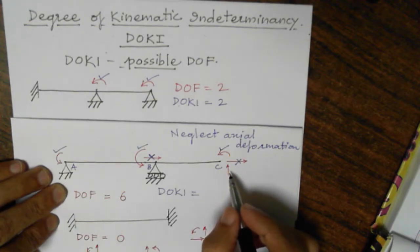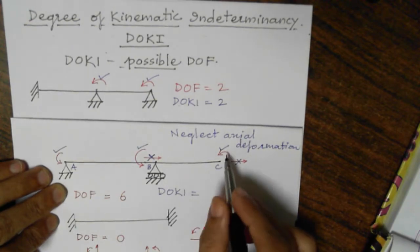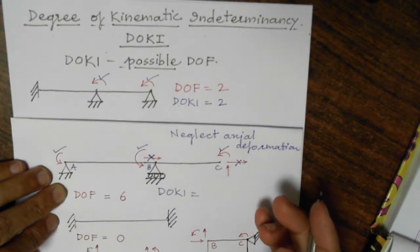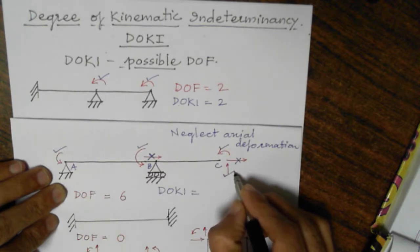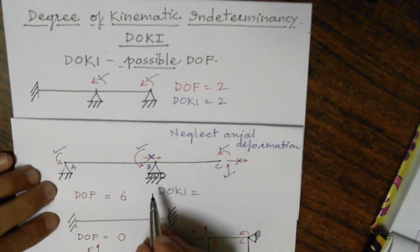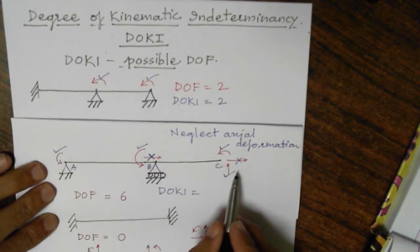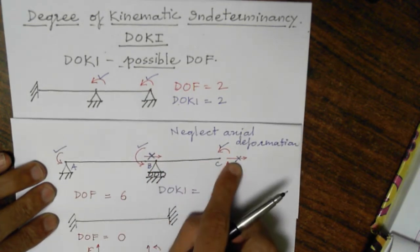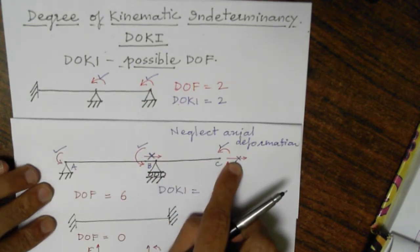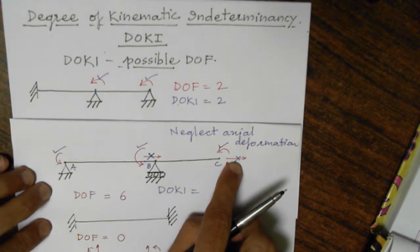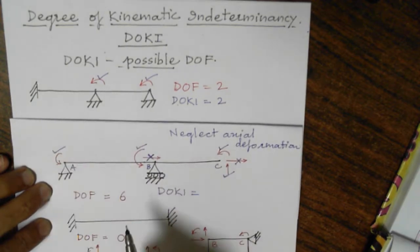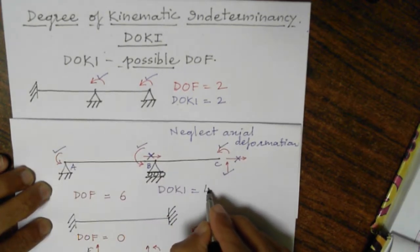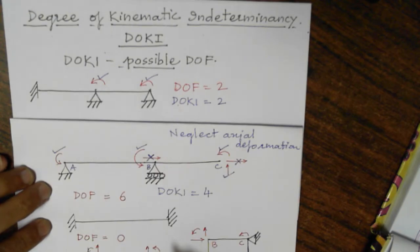Now, is it possible for this joint to move in y direction? Yes, it is possible — it is independent. So how many degrees of kinematic indeterminacy? Degree of freedom was six, out of which two degrees of freedom are not possible. So the possible degrees of freedom are: one, two, three, and four. There are four possible degrees of freedom. In other words, degree of kinematic indeterminacy of the structure is four.